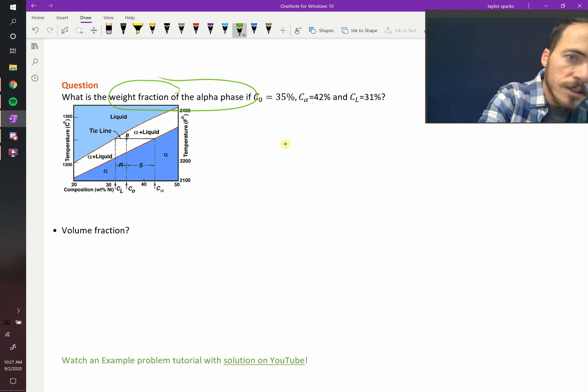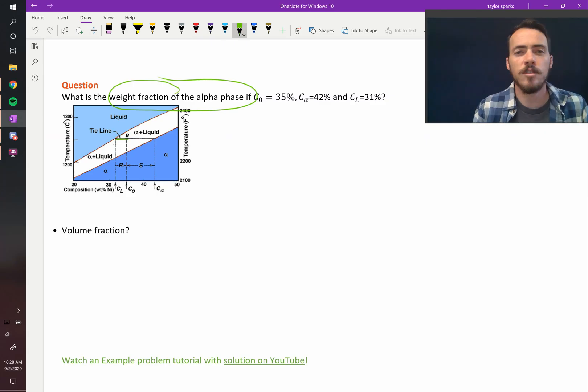We want this left hand portion right there. See that? We want from here to here. Hope you can see that. That's the portion of the tie line we want divided by the total length.